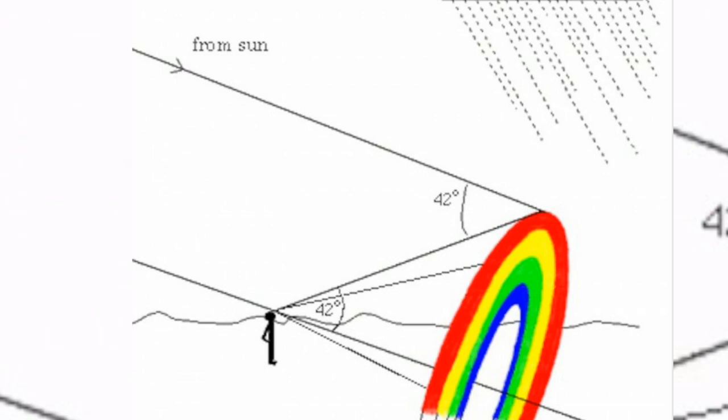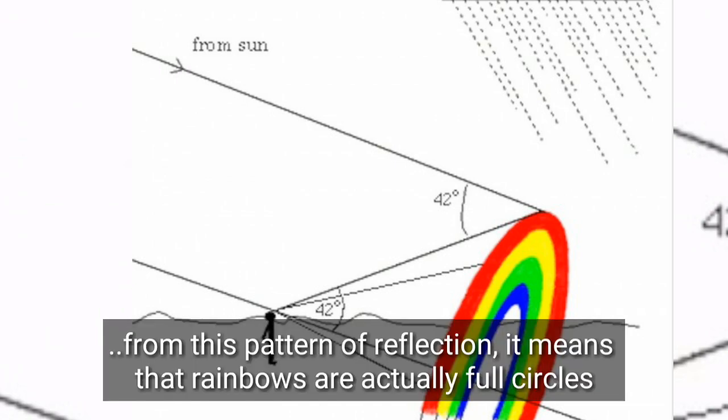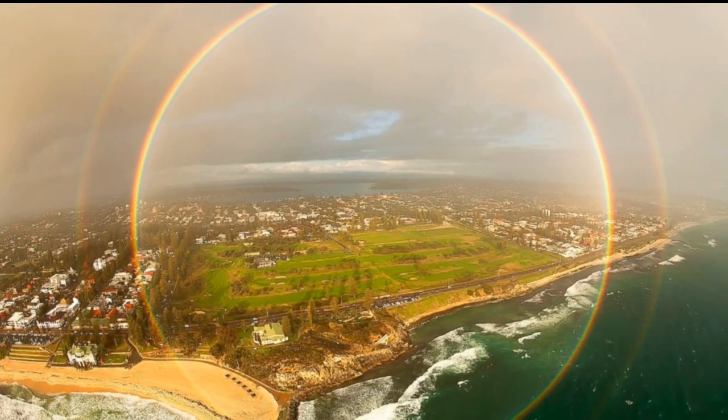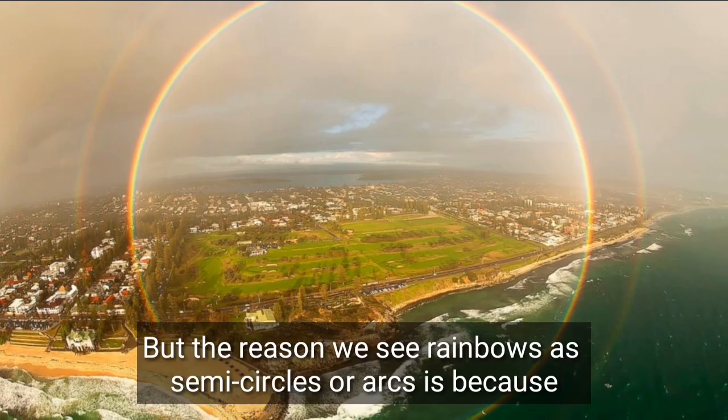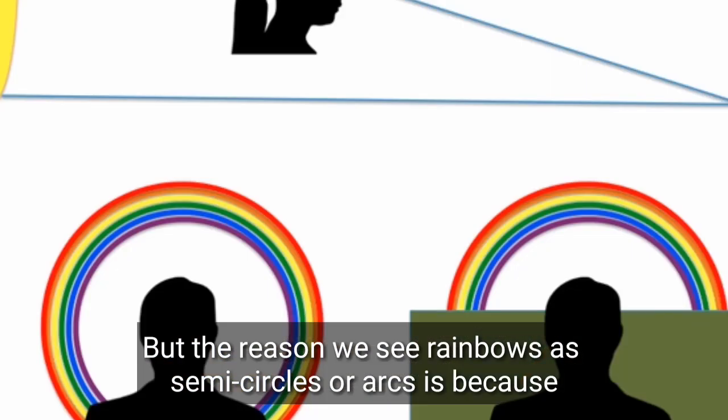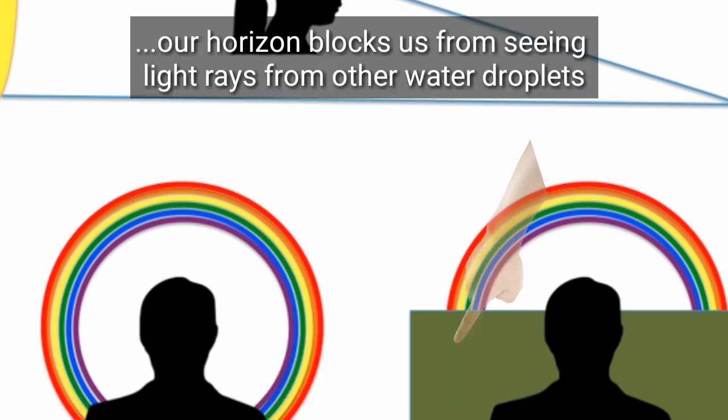From this pattern of reflection, it means that rainbows are actually full circles, and this is true. But the reason we see rainbows as semicircles or arcs is because our horizon blocks us from seeing light rays from other water droplets.